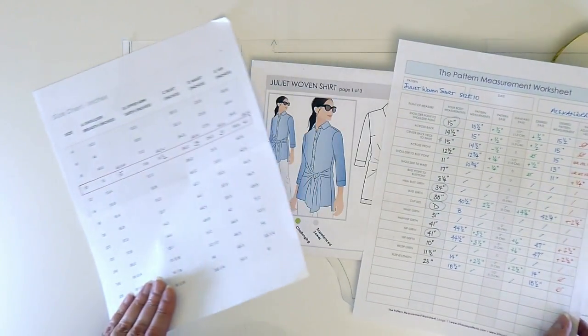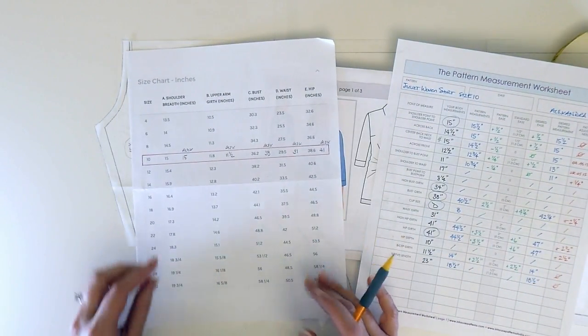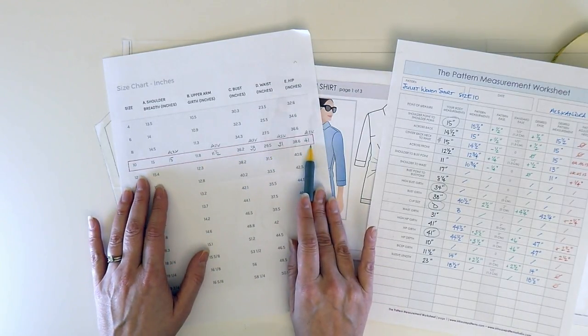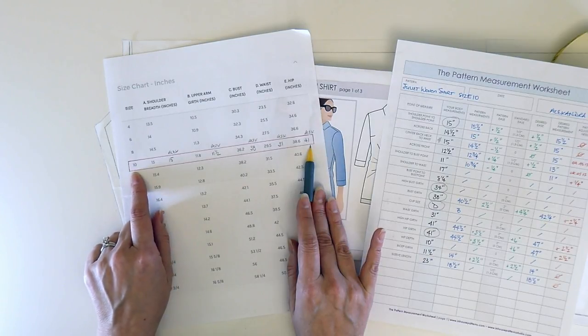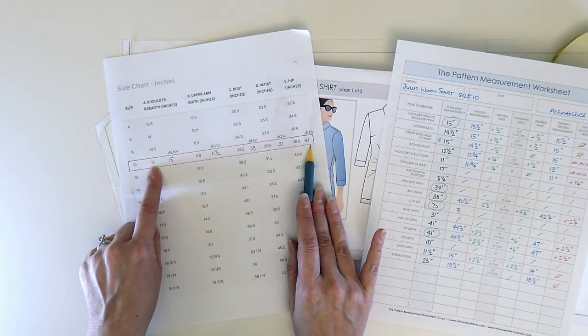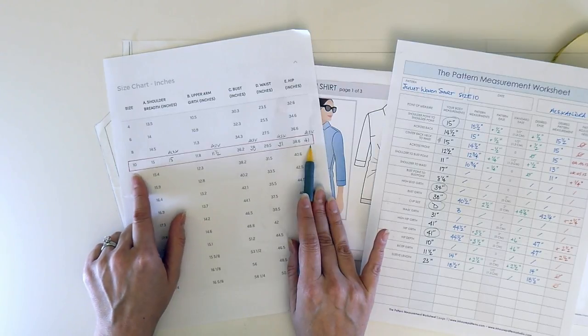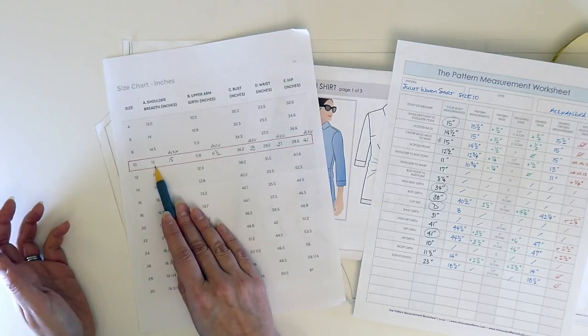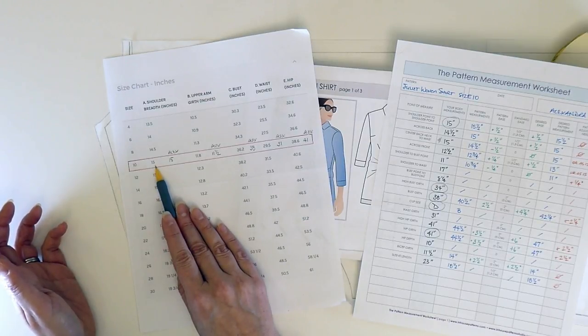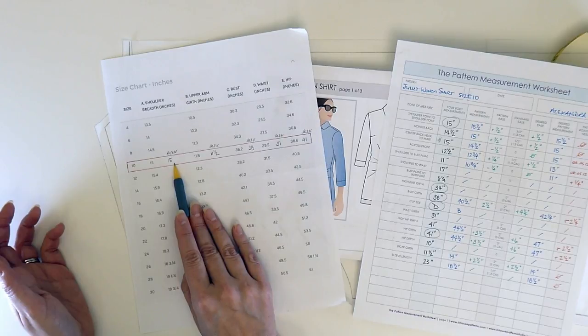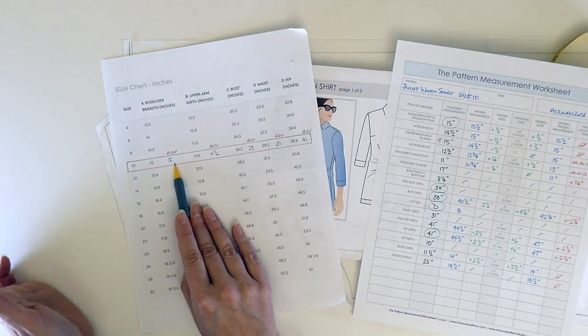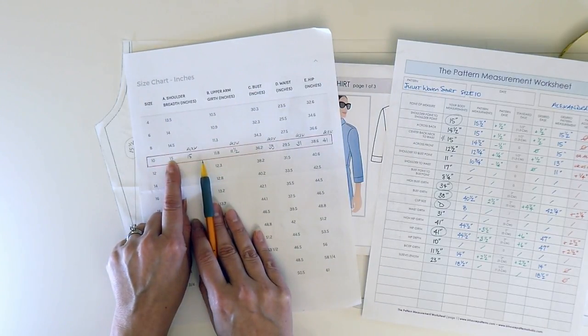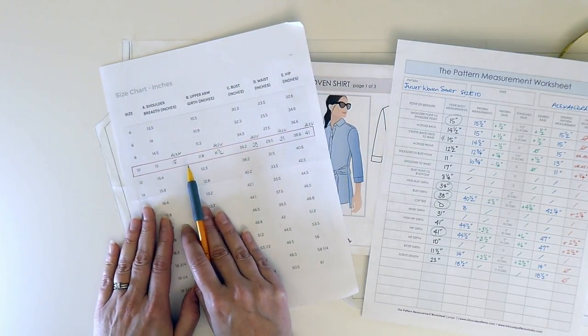Now, once I choose the size, what I need to do is go and determine how many changes I'm going to have to make to the rest of the pattern. Because this is going to tell me that it's going to fit me in the shoulder, but I may need to make adjustments somewhere else. So I picked the size 10. The shoulder, which happens to be listed here on the StyleArc body measurement, is exactly the same as mine. So I know now that I've chosen the correct size. The pattern measurement confirms it and the body measurement on the size chart confirms it. I've got the right size in the size 10.